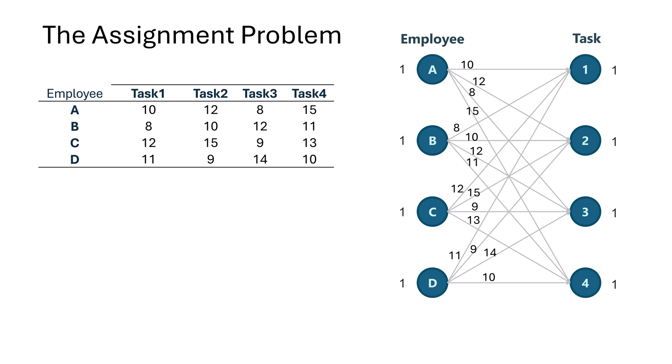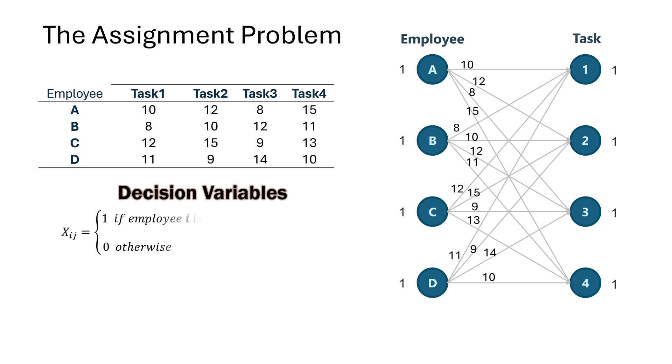To formulate this as a linear programming model, we first define our decision variables. Let x_ij equal 1 if employee i is assigned to task j, and 0 otherwise. That is, the variables represent a yes or no decision.